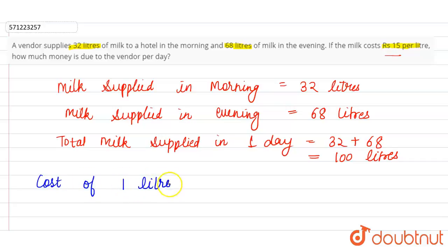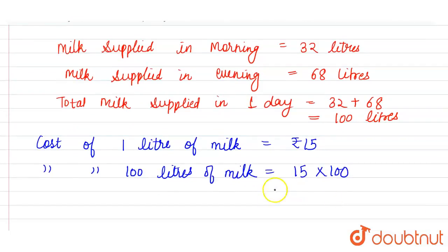Cost of 100 liters of milk will be equal to 15 into 100, and 15 into 100 is 1500. So rupees 1500 is the required answer for this question.